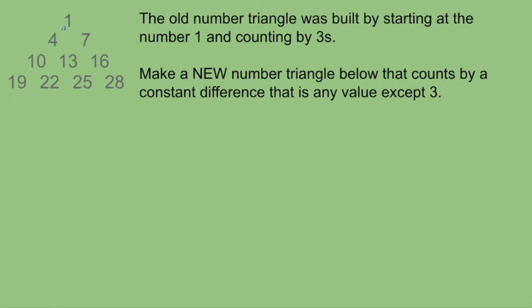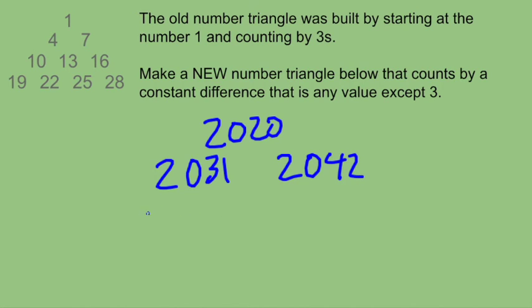So you can start at any number. You don't have to start at 1. You can start at 2,020. And you can count by any number you want that's not 3. So if I count by 11s, then my next would be 2,031, 2,042, 2,053.